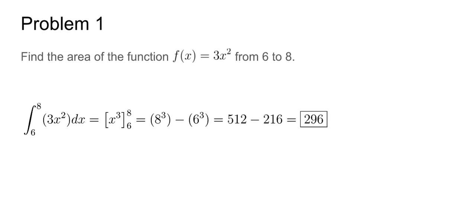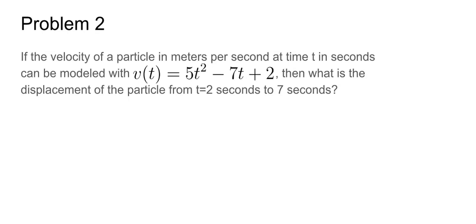Problem 2. If the velocity of a particle in meters per second at time t in seconds can be modeled with v(t) equals 5t squared minus 7t plus 2, then what is the displacement of the particle from t equals 2 seconds to t equals 7 seconds? We know that displacement means the difference in the position between the two times, so we can use a simple antiderivative, and then solve it at the endpoints of v(t). So we find the integral from 2 to 7 of 5t squared minus 7t plus 2, but this time it's dt because the function is in terms of time t.